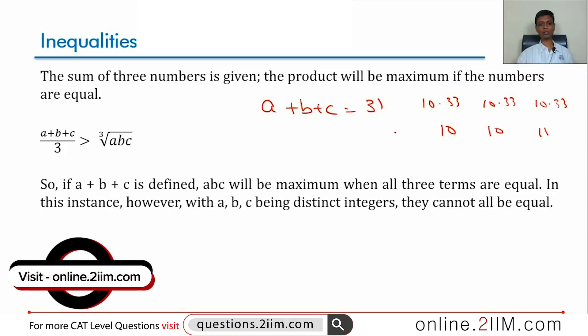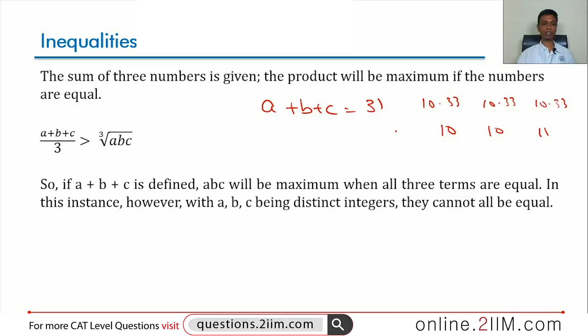10 into 10 into 11 will be a reasonably high product. When I mean reasonably high, given the constraint that we have to have integers, this will be the highest possible. But this is not sufficient for us. Remember, we are looking for distinct integers.